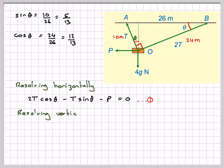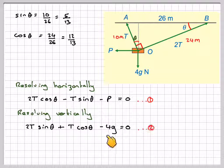And then resolving vertically, we've got two forces going upwards. We've got this one from here and then this one from here as well, so it's 2T sin θ plus T cos θ minus 4g, that's going downwards, must be equal to 0.